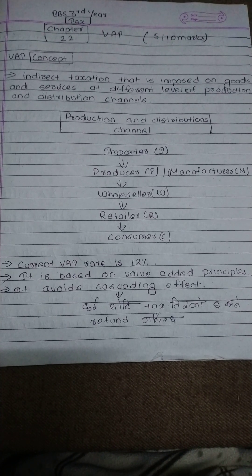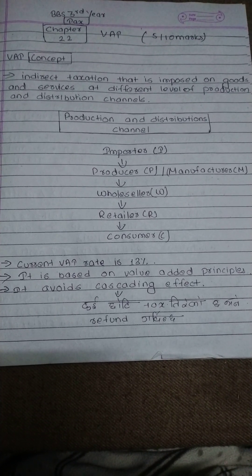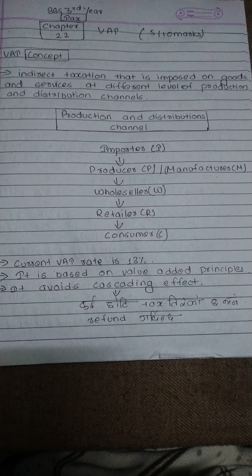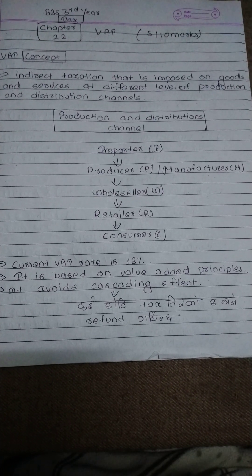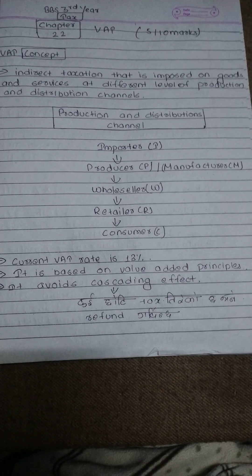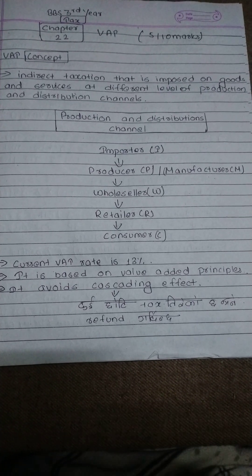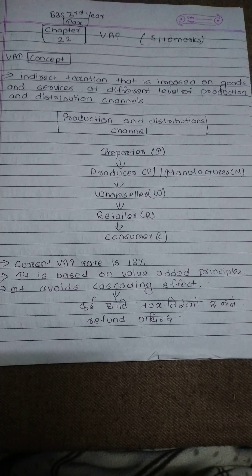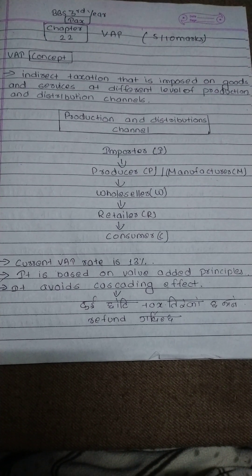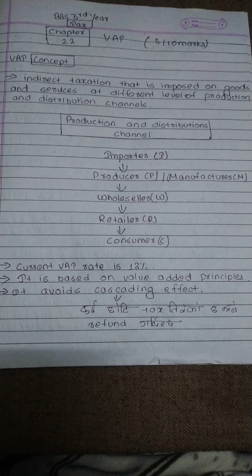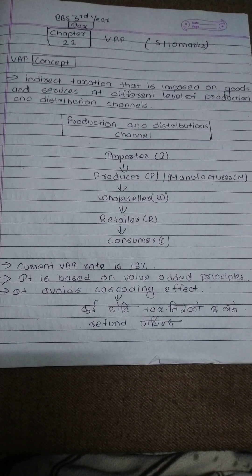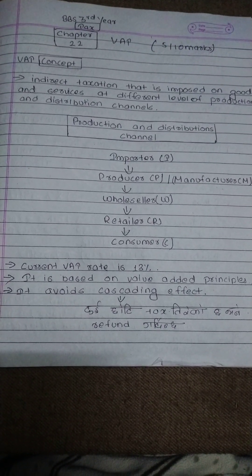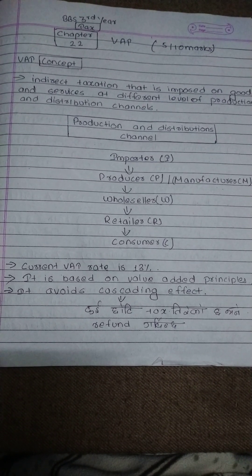There are different levels and different taxes applied at different stages: producer, wholesaler, retailer, and consumer through the production and distribution channel. This creates a cascading effect on goods and services, similar to the cascading effect under VAT. Import, producer, wholesaler, retailer, consumer — BAT at 13% addresses this cascading effect.